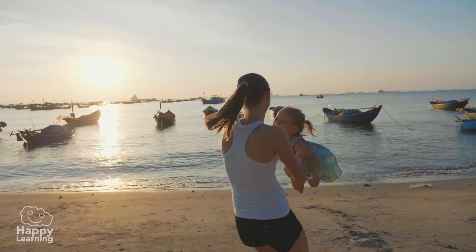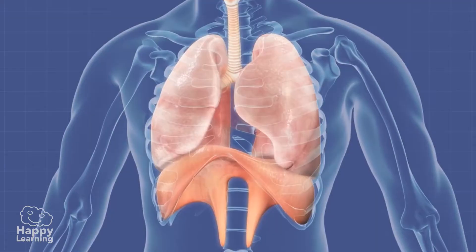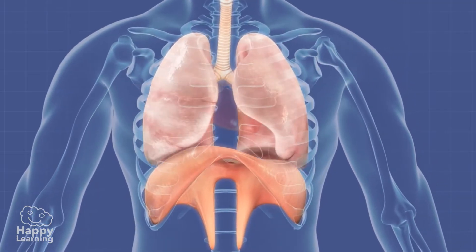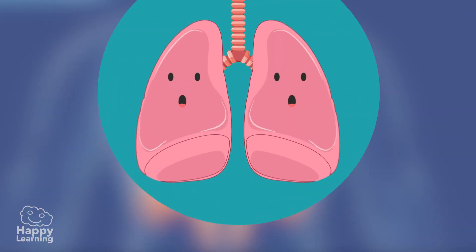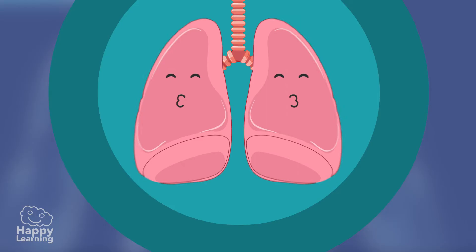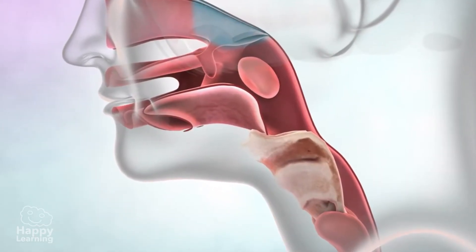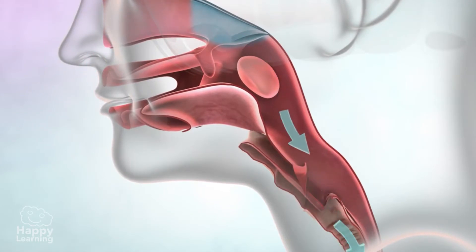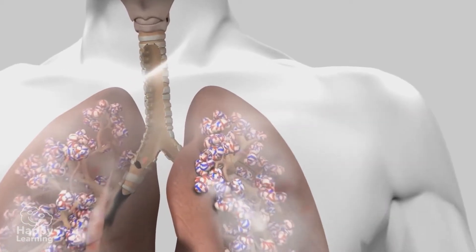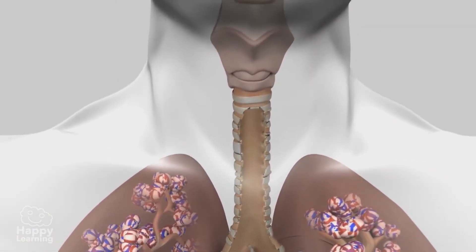Hello friends! We all know that in order to live we have to breathe, and to carry out this very important function we use the respiratory system. Breathing is an involuntary process that we do without realizing, but we can control it. Today we're going to find out what breathing consists of and how the respiratory system works.